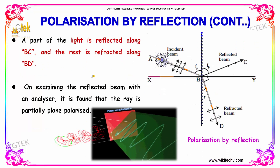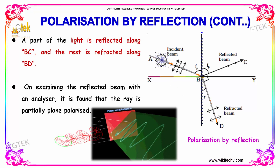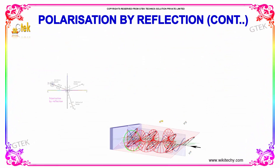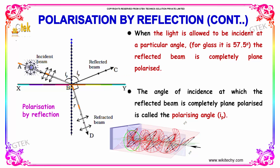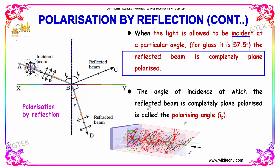A part of the light is reflected along BC and the rest is refracted along BD. On examining the reflected beam with an analyzer, it is found that the ray is partially plane polarized. When the light is allowed to incident at a particular angle — for glass it is 57.5 degrees — the reflected beam is completely plane polarized. The angle of incidence at which the reflected beam is completely plane polarized is referred to as the polarizing angle.